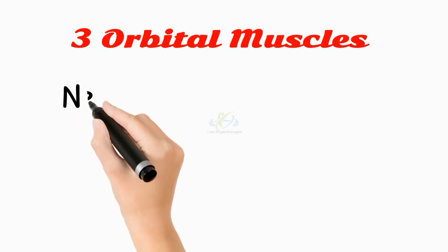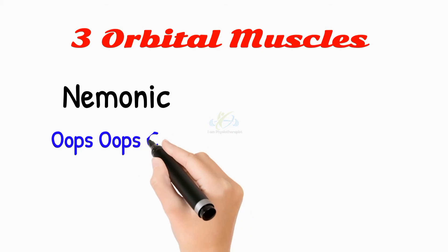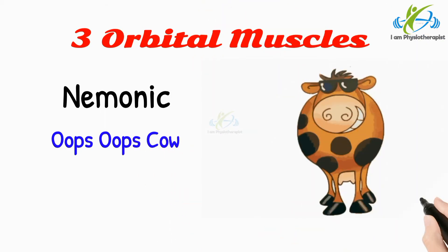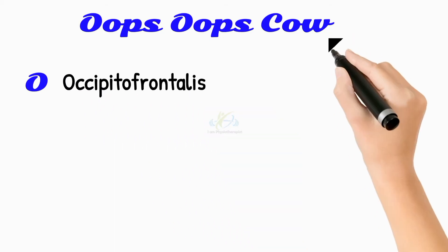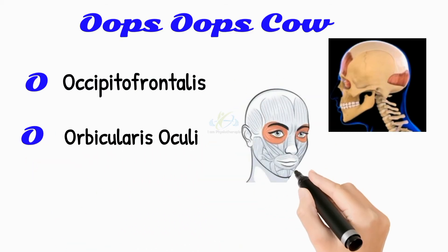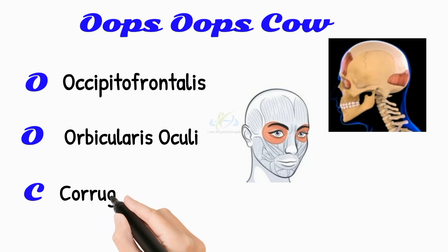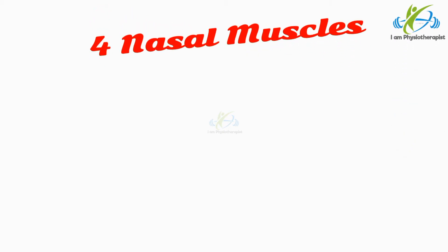There are three orbital facial muscles. The mnemonic for orbital muscles is 'Oops Oops Cow.' The first O stands for occipitofrontalis, the second O stands for orbicularis oculi, and C stands for corrugator superciliae.